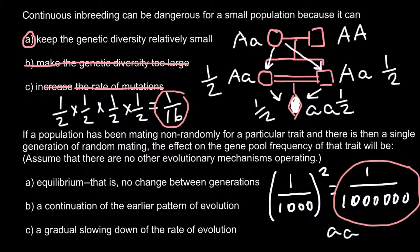Equilibrium — no change between generations. Answer B, continuation of the earlier pattern of evolution, cannot be correct because before it was non-random mating and now it is random mating. Answer C, a gradual slowing down of the rate of evolution, is also incorrect because if random mating continues there would be stability and allelic frequencies would not change from generation to generation. Of course, we assume the population is large enough and there are no other external influences like migration, new mutations, or differential fitness between genotypes.